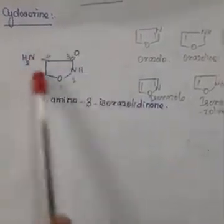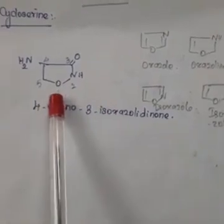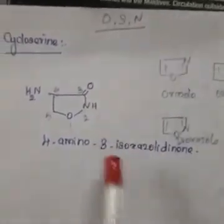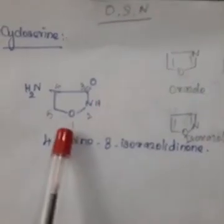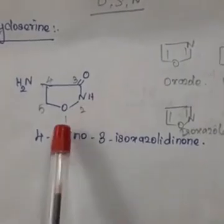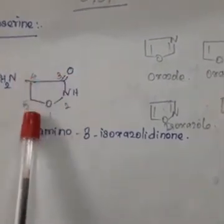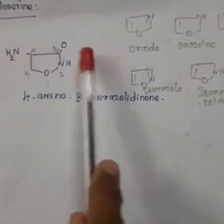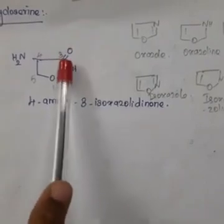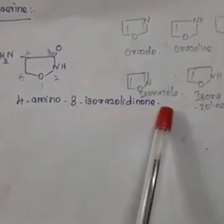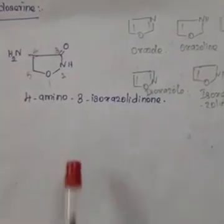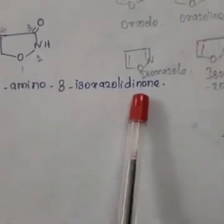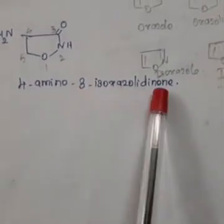For numbering, oxygen has the highest priority among heteroatoms (order: O > S > N), so oxygen is position 1 in the ring: 1-oxygen, 2, 3, 4, 5. The nucleus here is isoxazolidine. At position 3 there is a ketone (suffix: -one) and at position 4 there is an amino group. Therefore, the chemical name is 4-amino-3-isoxazolidinone. This completes the anti-tubercular agents.